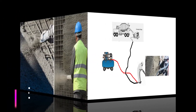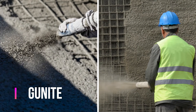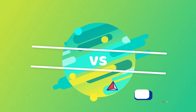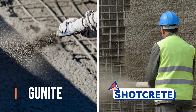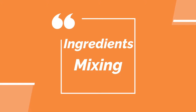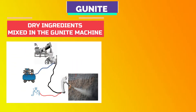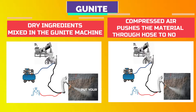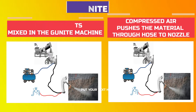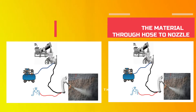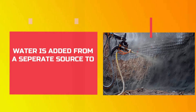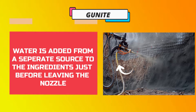Now let us have a comparison between gunite and shotcrete. First we will discuss about ingredient mixing. In gunite, the dry ingredients are mixed in the gunite machine. Compressed air pushes the material through a hose to the nozzle. Water is added from a separate source to the ingredients just before leaving the nozzle.